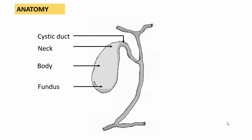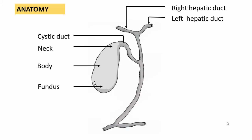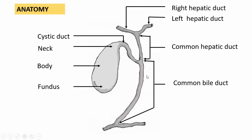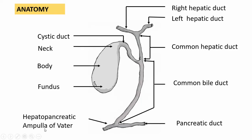There are right and left hepatic ducts which arise from the liver and converge to form a common hepatic duct. This common hepatic duct combines with the cystic duct to form the common bile duct. The common bile duct is joined by the pancreatic duct. In most cases the pancreatic duct and the common bile duct combine to form the hepato-pancreatic ampulla of Vater. Sometimes the common bile duct or the pancreatic duct can directly enter into the duodenum.